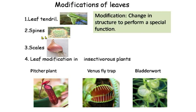Next are spines — needle-like structures. The leaves change their structure into needles to reduce the loss of water. This modification is present in plants grown in desert areas where water is very scarce. To conserve water by reducing loss through transpiration, the leaves change their structure into spines.